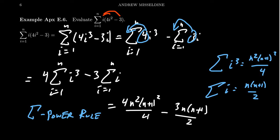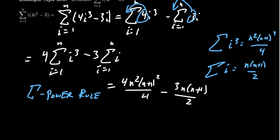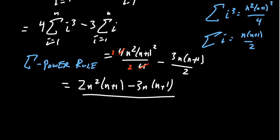Now we want to combine like terms. Note that 4 divides with 4, but to add these fractions together I want a common denominator of 2, so I'll rewrite 4/4 as 2/2. That lets us write the combined sum as [2n²(n+1)² - 3n(n+1)] all over 2.